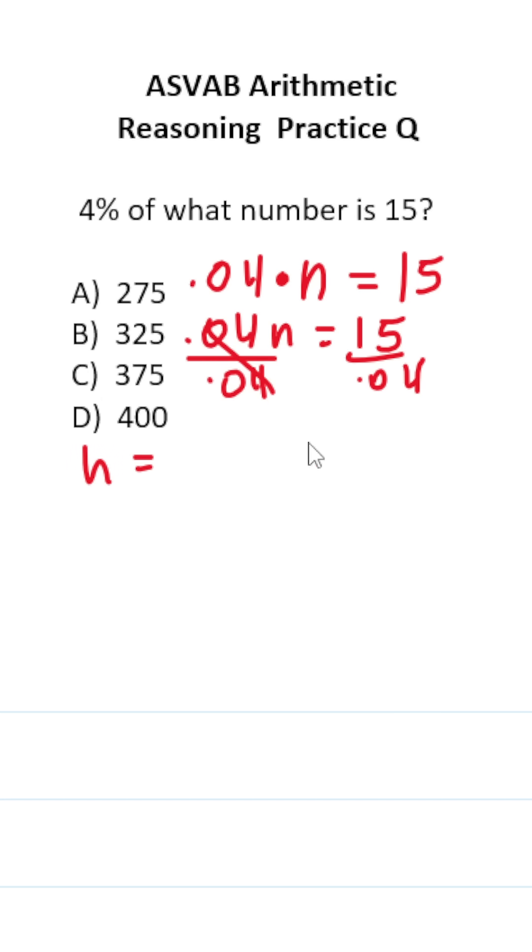N is 15 divided by 0.04 like this. You can't do division with the decimal on the outside, so shift its decimal. Shift this one two times and add placeholders. This becomes 1,500 divided by 4.